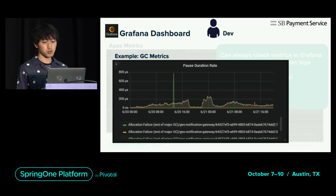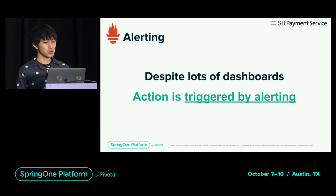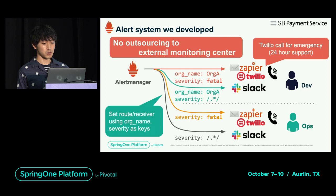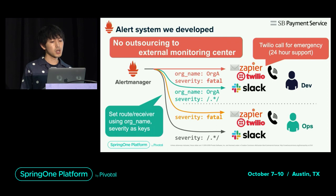Next I'd like to talk about alerts. There are lots of dashboards in Grafana but we can't always check them, so basically the action is triggered by alerts. We handle alerts in-house and do not outsource to external monitoring centers. However, the payment system operates 24/7, 365. So alerts are classified into severities, and those that need urgent response will be called by Trilio. This makes it possible to notice and respond in a timely manner even during nights and holidays.